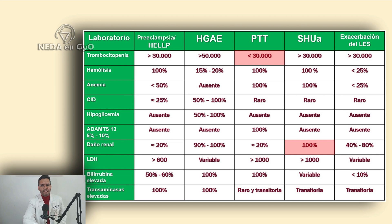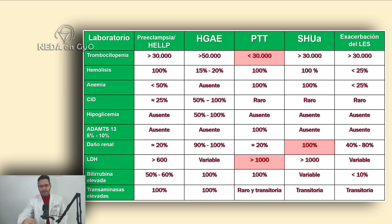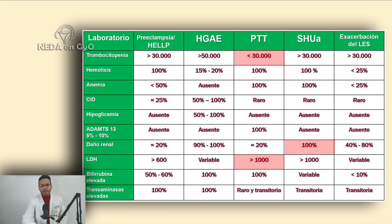LDH (lactate dehydrogenase) levels: in HELLP syndrome, greater than 600. In acute fatty liver of pregnancy, levels are variable — may be normal or elevated. In TTP, always greater than 1,000 — very important. Patients with severe thrombocytopenia of 15,000–20,000 platelets and LDH of 2,000–3,000, especially with symptoms starting before week 20, should raise strong suspicion for TTP. In aHUS, also above 1,000. In lupus exacerbation, variable.